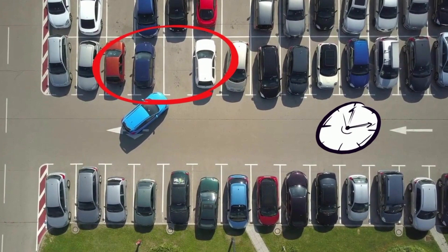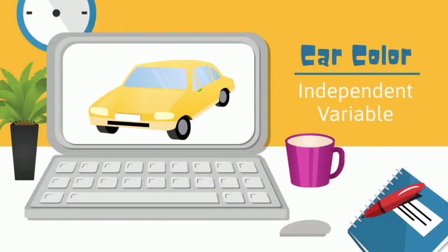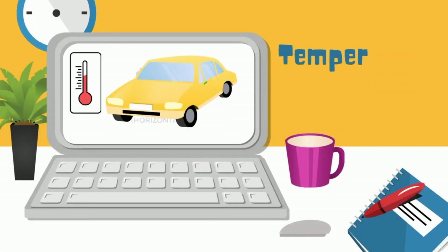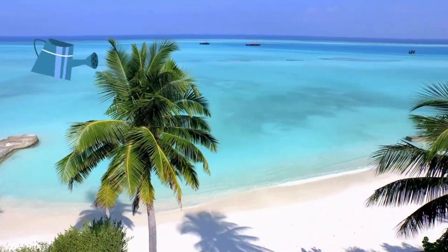Remember, the independent variable is what you change in the experiment. The temperature inside each car is your dependent variable — it may vary according to the car's color. You will be measuring this variable by taking the temperature inside the car every 30 minutes. Remember, the dependent variable is what you are measuring.